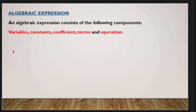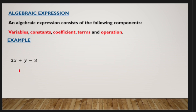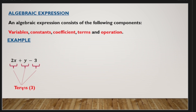For example, let's look at 2x plus y minus 3. This is an algebraic expression consisting of terms, variables, constants, and operations. The terms in this expression are 2x, y, and 3 — so there are 3 terms. Terms are always separated by an operation such as addition or subtraction.